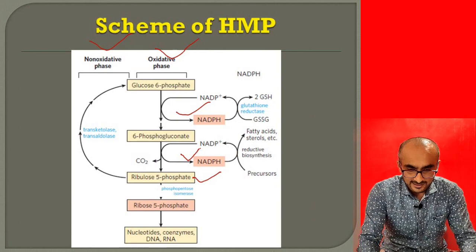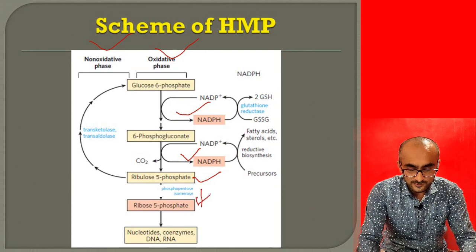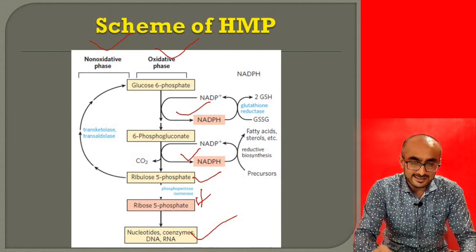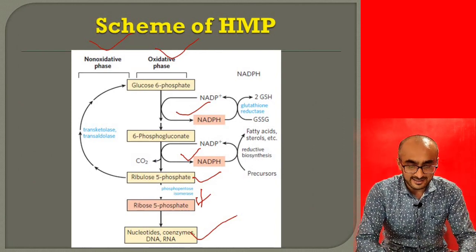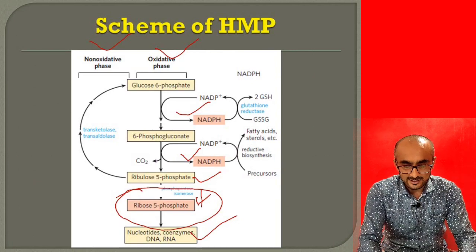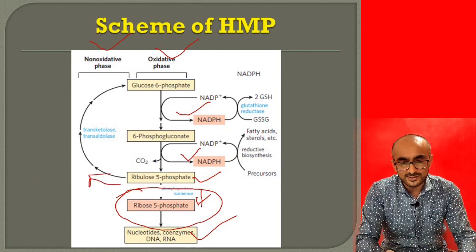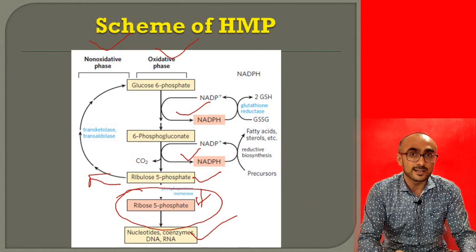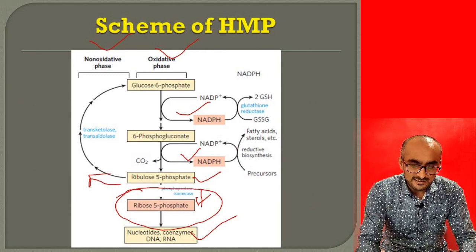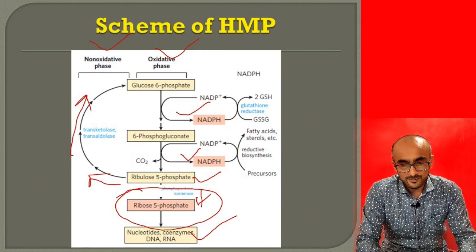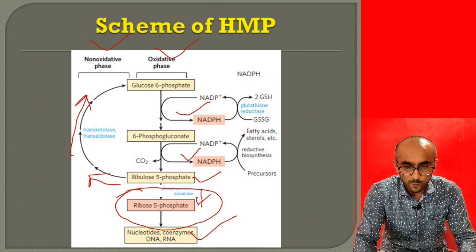Ribulose-5-phosphate is further converted to ribose-5-phosphate, which is required for biosynthesis of nucleotides, coenzymes, and nucleic acids such as DNA and RNA. But if the cell does not need RNA, DNA, or ribose-5-phosphate, ribulose-5-phosphate can enter the non-oxidative reactions, catalyzed by transaldolase and transketolase, which convert the five-carbon ribulose-5-phosphate back to glucose-6-phosphate, which can re-enter the pathway to produce more NADPH.